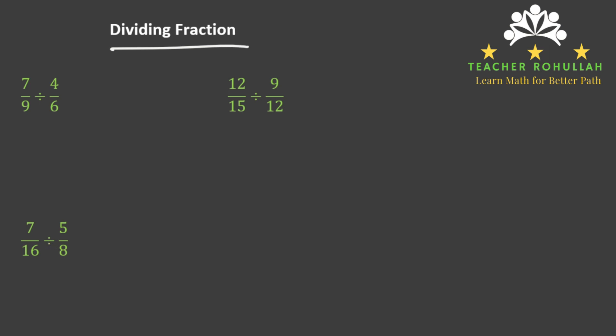Let's work on the first one. To divide 7/9 by 4/6, we have to write the first fraction which is 7/9 and multiply it by the inverse. Inverse means we have to bring 6 up and 4 down.